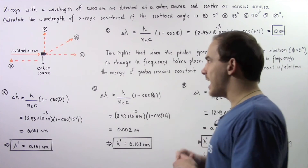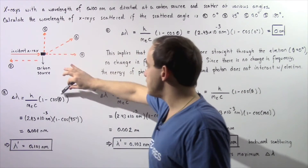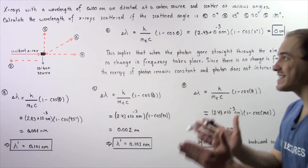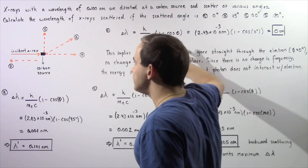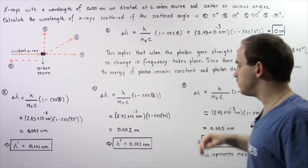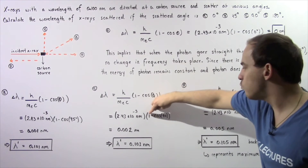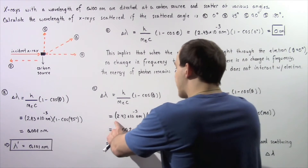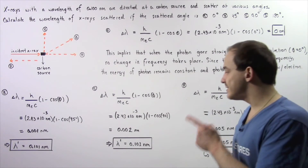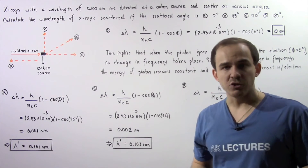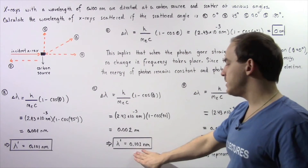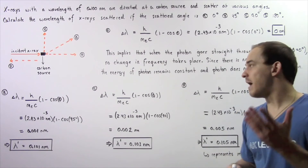In Part C, we apply the same equation, but now the angle phi between the scattered x-ray and the horizontal is 90 degrees, as shown. Plugging in 90°: 1 minus cosine of 90° multiplied by 2.43 × 10⁻³ nanometers gives us about 0.002 nanometers. Adding this shift to 0.100 nanometers gives us the wavelength of the scattered x-ray in Part C.